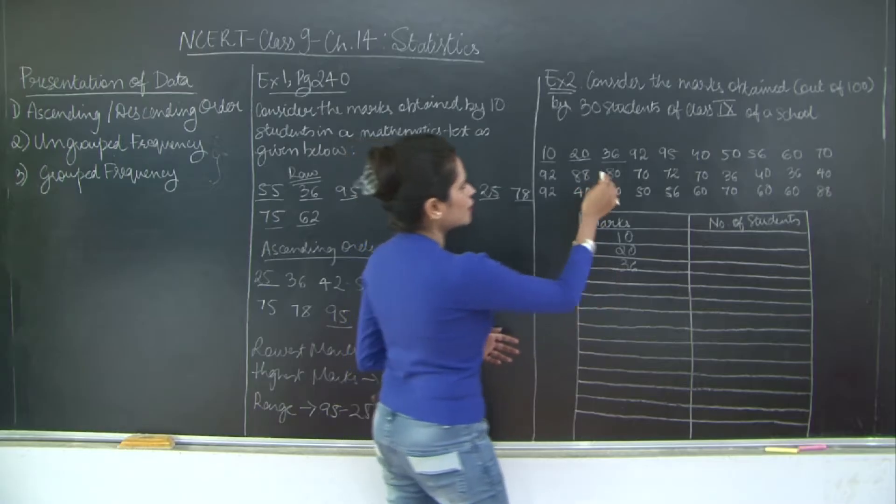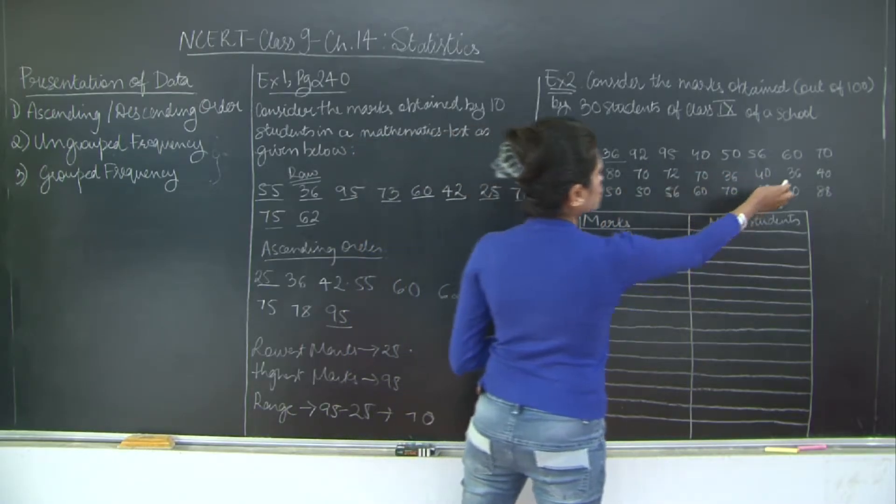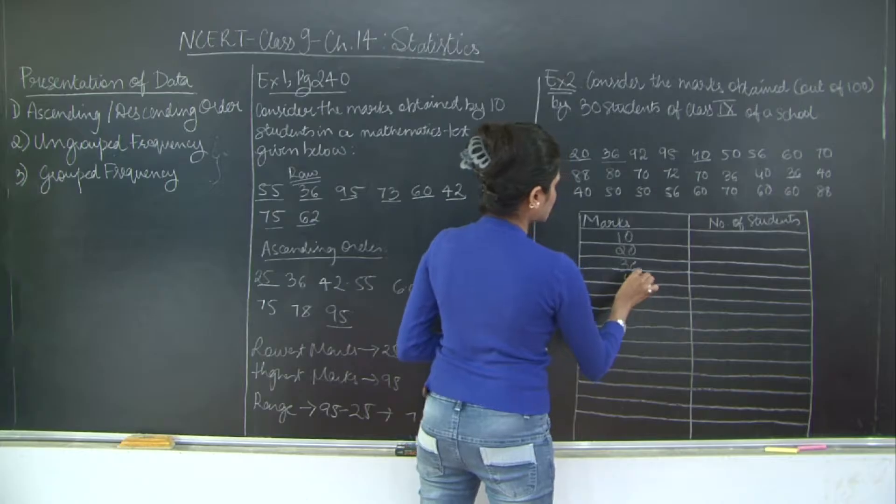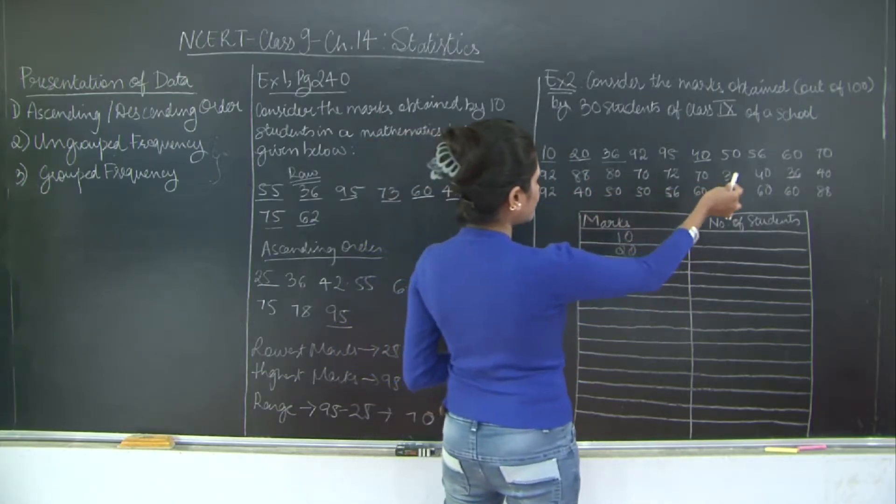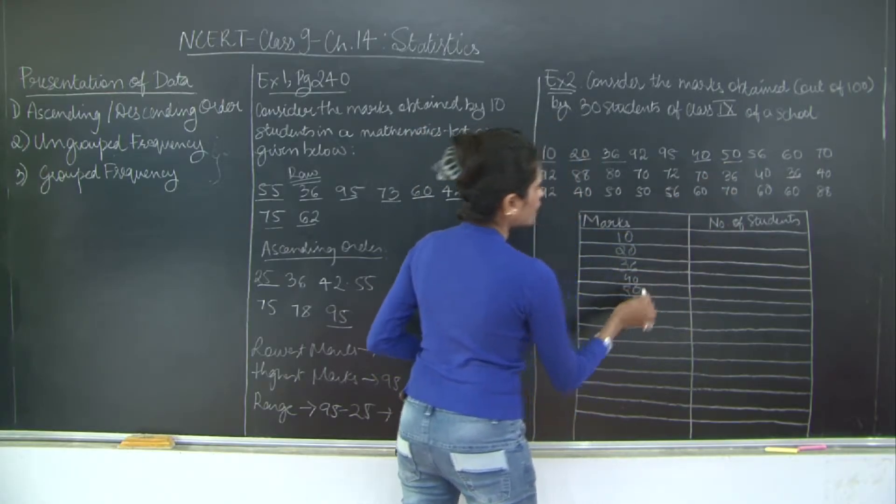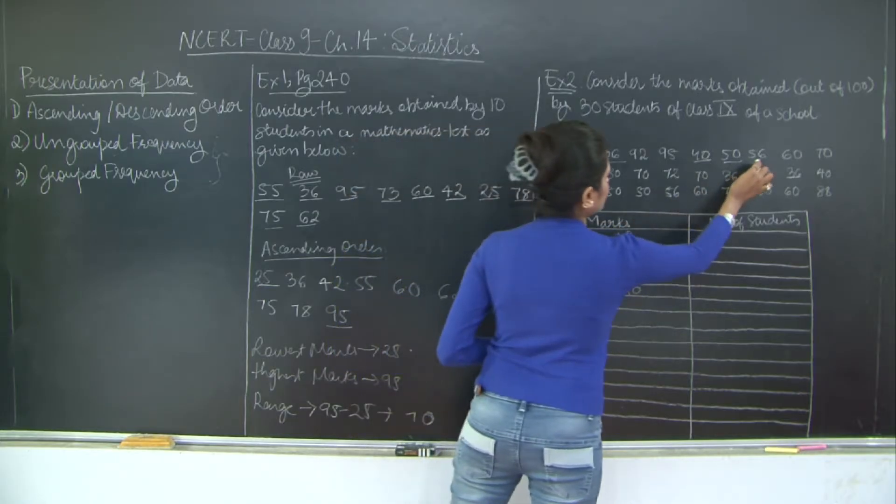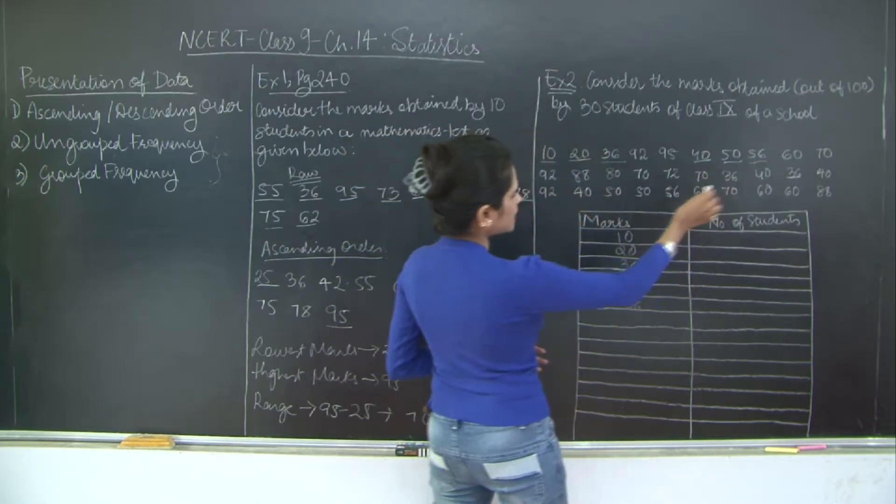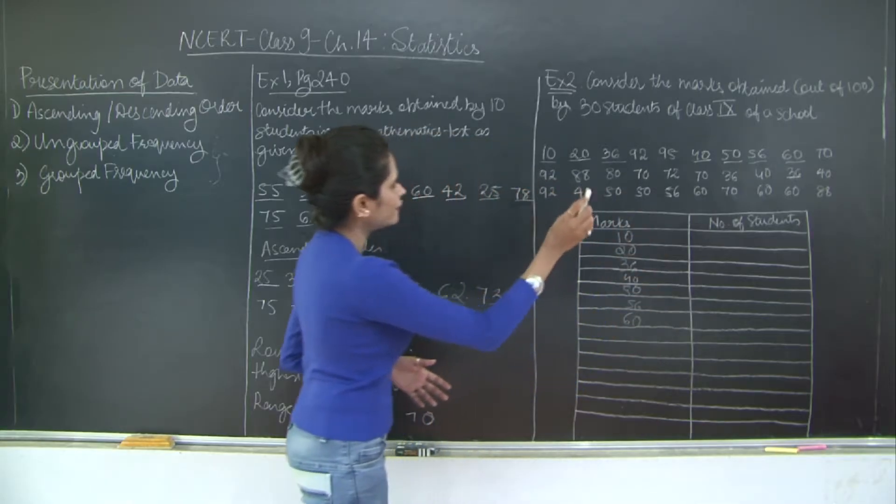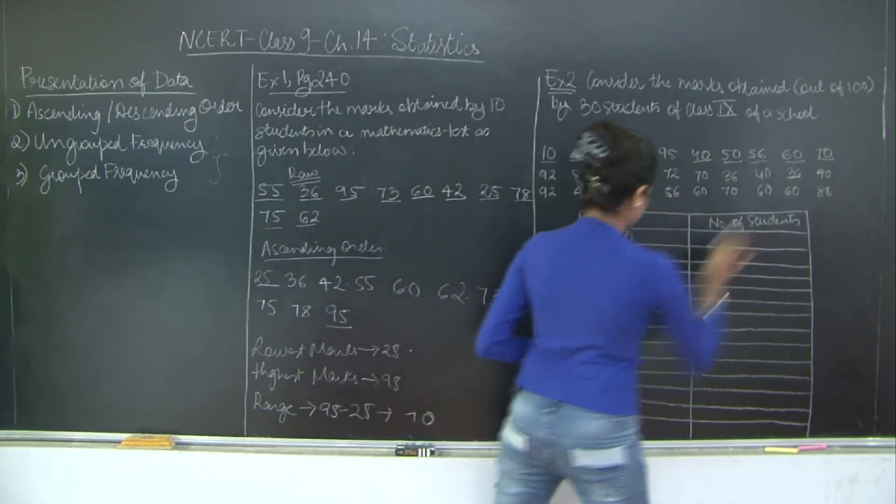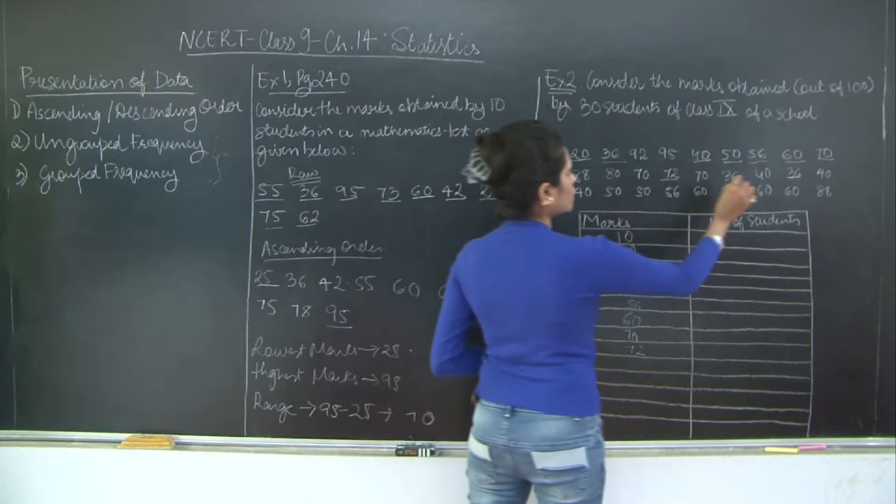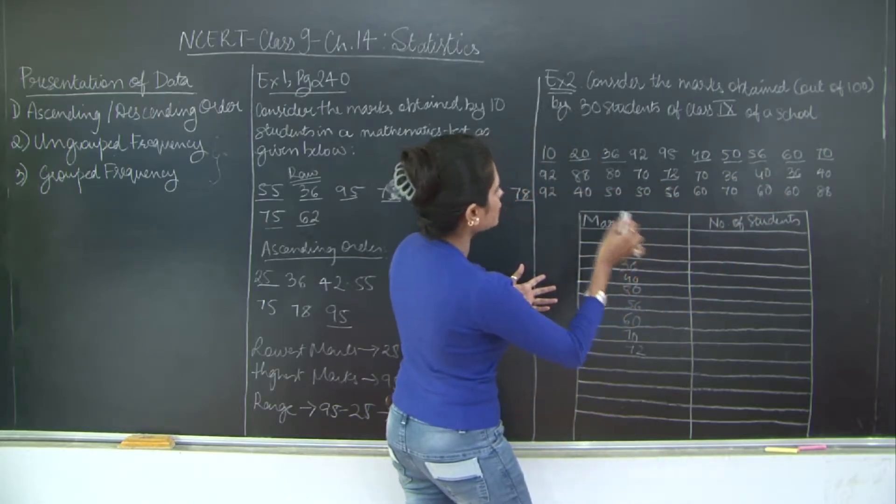So I'm just writing down all the marks from lowest to highest. Then I have 36, so 36 is gone again over here. Which other number is the lowest? After 36 we have 40, so 40. Then which is the other number that we have? There is nothing important, so 50. Then after 50 we have 56. Then after 56, do we have anything in 50s? No. Then 60. And we have 70. Then we have 72.